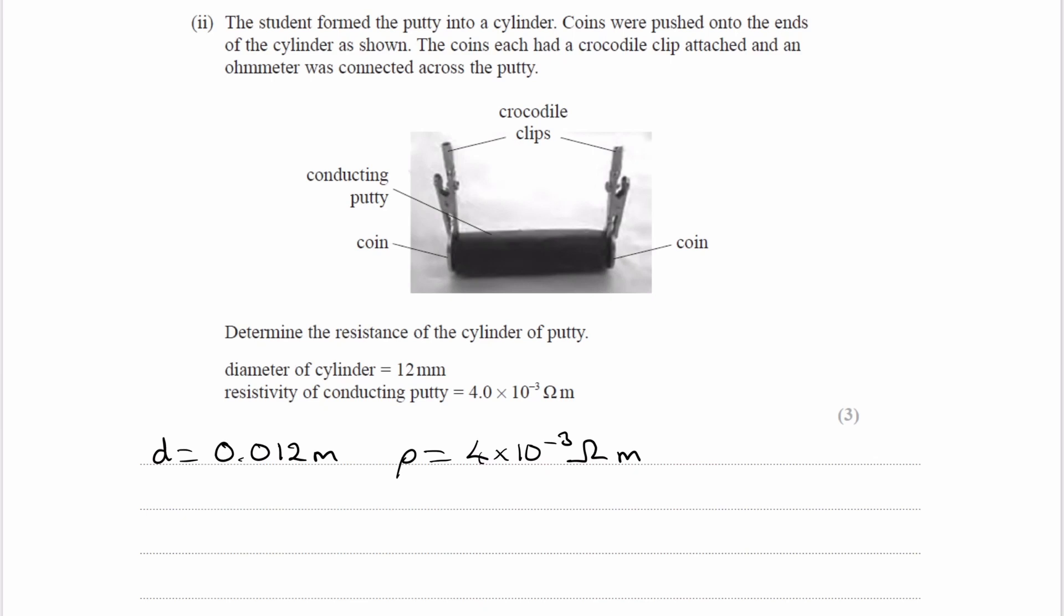And we're trying to work out the resistance. So resistance, given that we're given diameter, we can work out cross-sectional area from that. It's most likely that we're going to be using the resistivity times length over area equation. We're given resistivity as well. But we don't have the length.